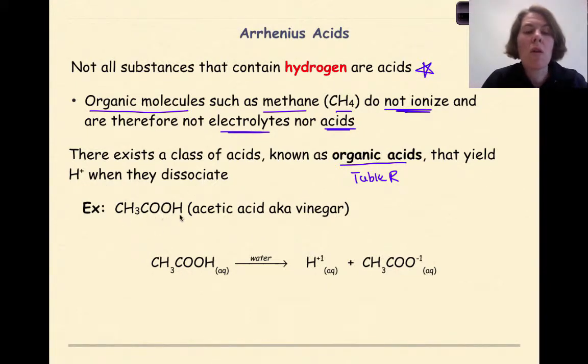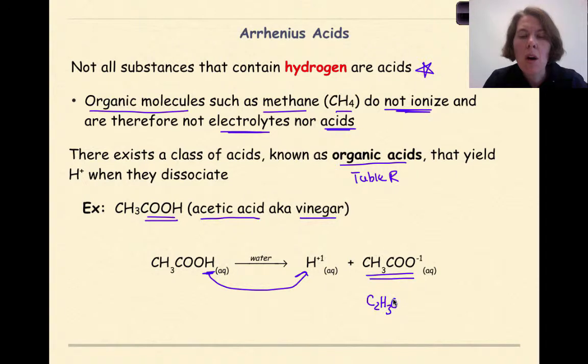There exists a class of acids known as organic acids, which we can find on table R of your reference table, that yield hydrogen when they dissociate. CH3COOH, which is known as ethanoic acid in an organic sense, acetic acid on your reference table, and more commonly known as vinegar, this is a type of organic acid. When acetic acid breaks down in water, this hydrogen is our acidic hydrogen that dissociates into hydrogen ions, and then we have that acetate ion. This is an organic acid breaking down into hydrogen ions and the acetate ion.